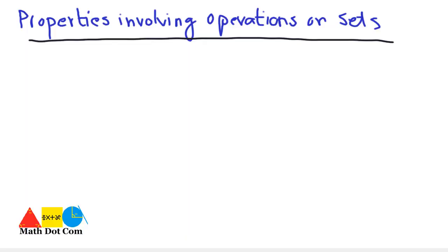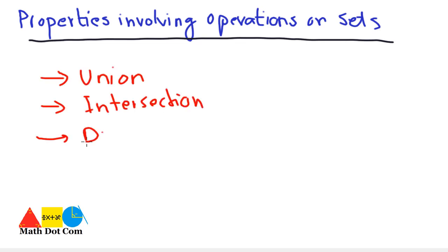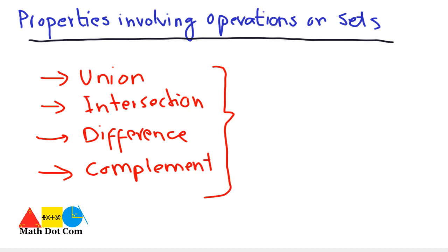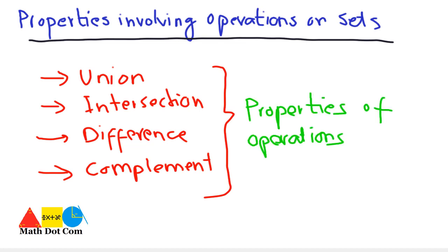Today's topic is properties involving operations on sets. We have already discussed the four operations on sets: union, intersection, difference, and complement. Now we will see what properties these operations hold and discuss them one by one.